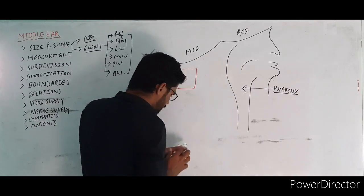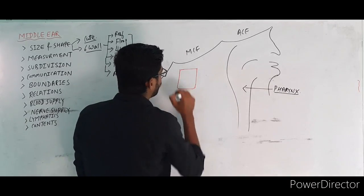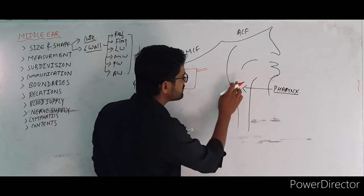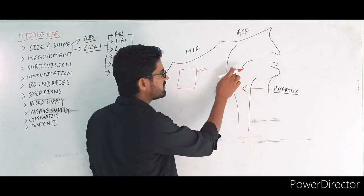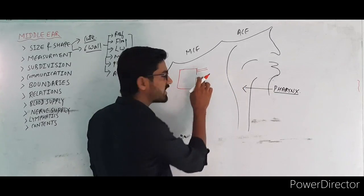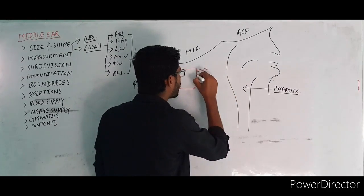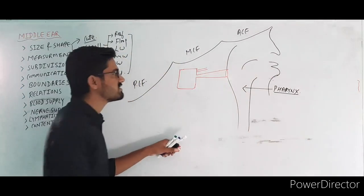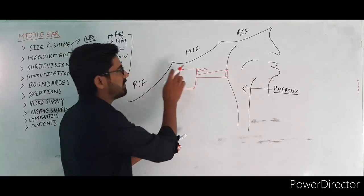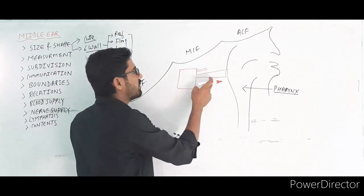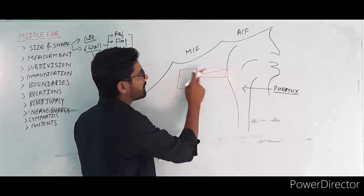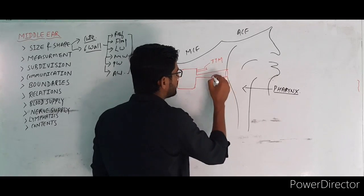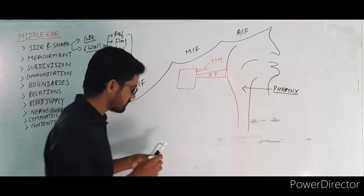Looking at the anterior wall — here is one canal for the tensor tympani muscles, and this is the nasopharynx. There is a communication between the middle ear and the nasopharynx called the pharyngotympanic tube, also known as the auditory tube or Eustachian tube, since it connects the pharynx and the middle ear cavity.